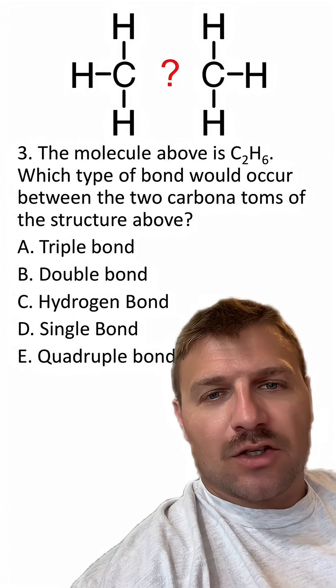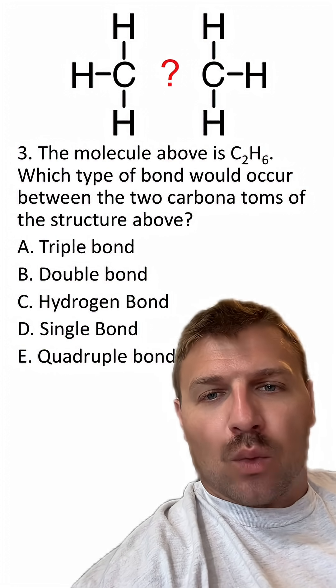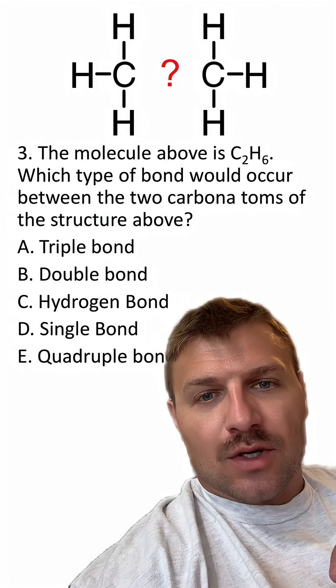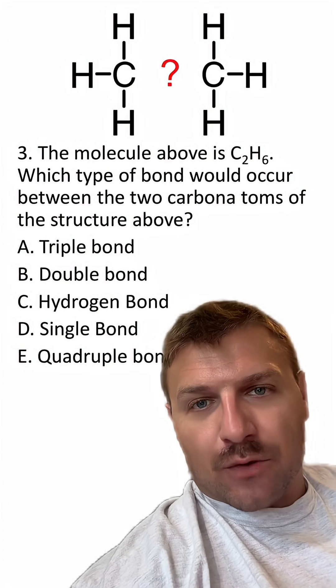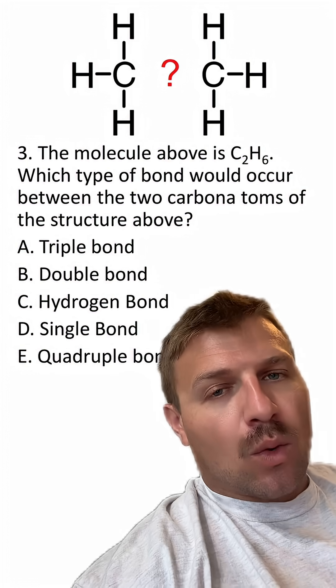And last question is kind of easy. The molecule above is C2H6. Which type of bond would occur between the two carbon atoms of the structure above? So again, that question mark is representing some type of bond. What is it?